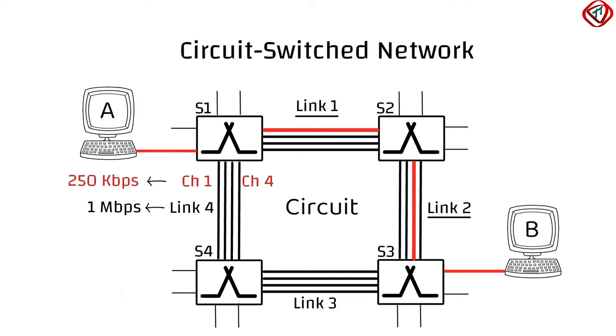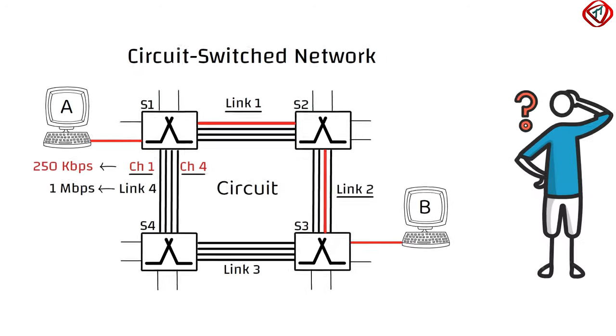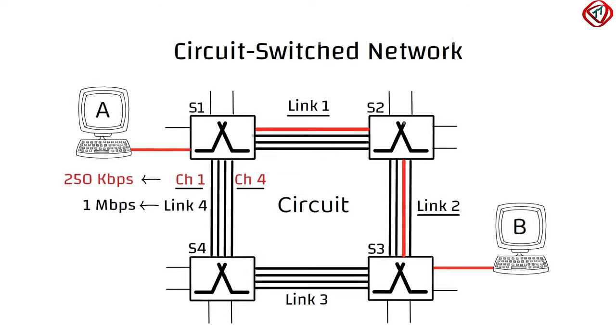In the current network, each link has four channels. These channels, or the combination of channels, are reserved for one-to-one communication. So, what exactly these channels are, and how they are established?